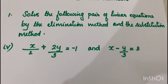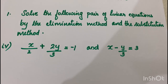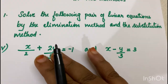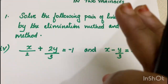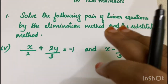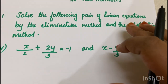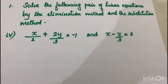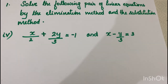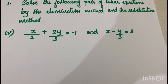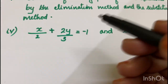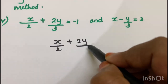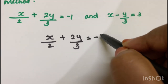The first question is: solve the following pair of linear equations by the elimination method and substitution method. We can solve the equation using both the elimination method and substitution method. The first equation is x by 2 plus 2y by 3 is equal to minus 1.